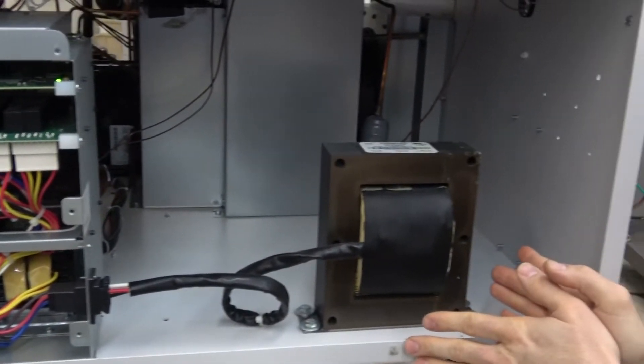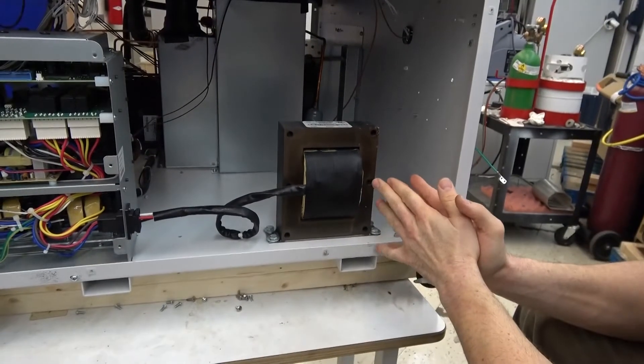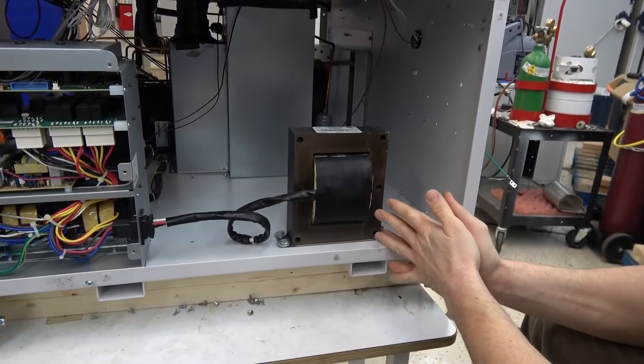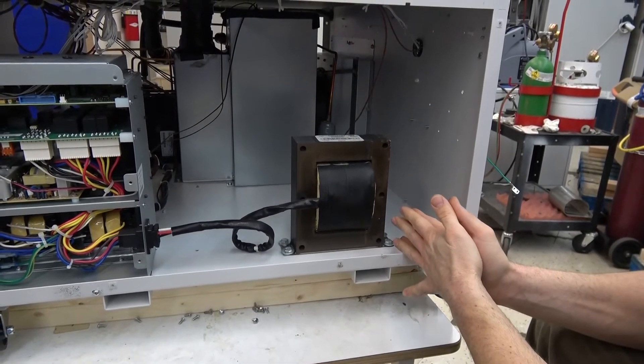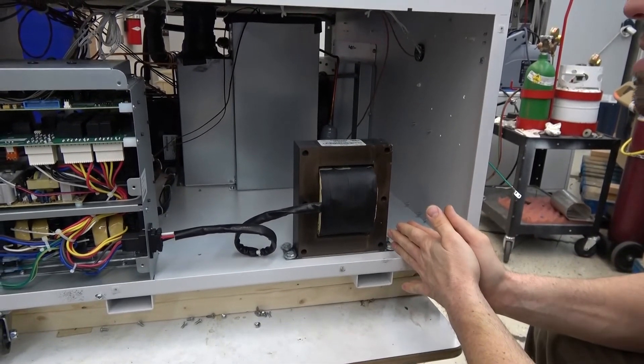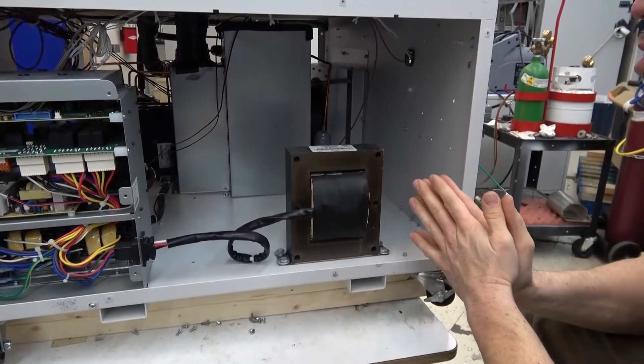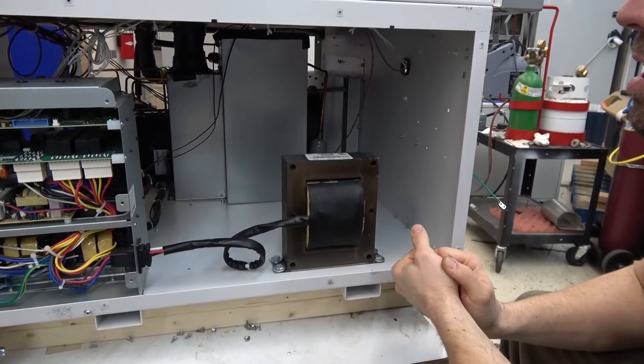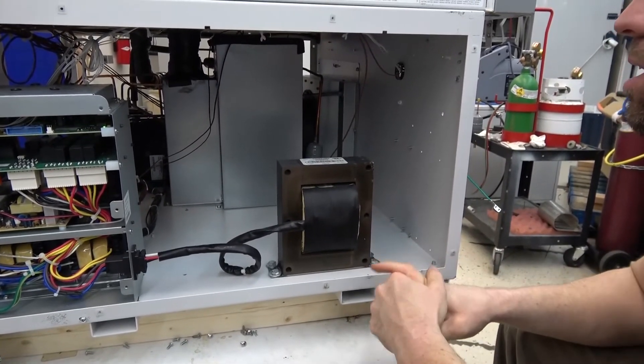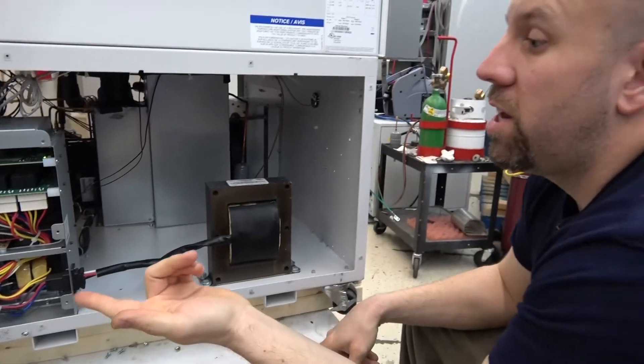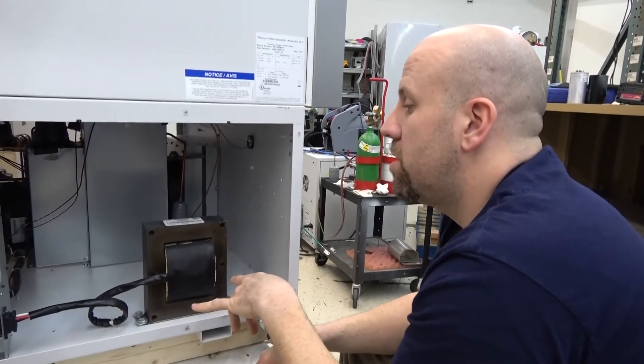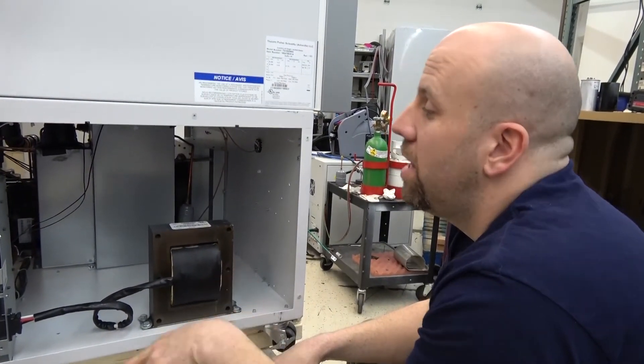This transformer is the first time I've seen this on a ULT freezer and on a Thermo too. It's to give you the 240 volts that you need to work with the variable speed drives. So it comes in at 120 or 110, comes in here, turns into 240 and goes out over there.